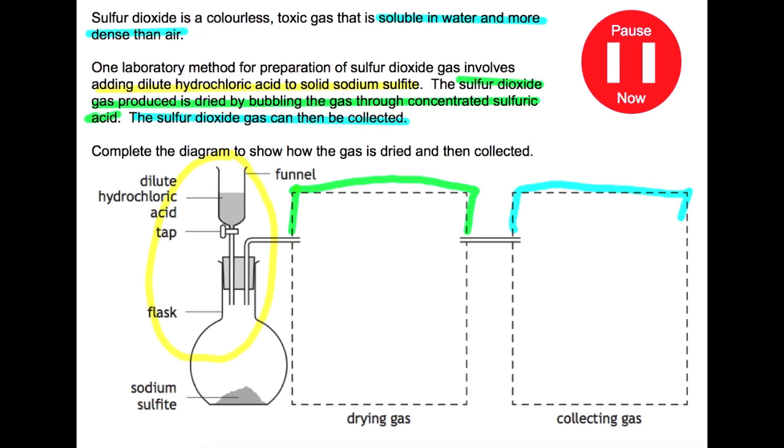So we're going to draw in the two parts that are required for this. So for the first bit we need to bubble the gas into the concentrated sulfuric acid. So we need to have some sort of vessel to do that in. So I'm going to draw a boiling tube here and the delivery tube we have here is going to go down and it has to go into the sulfuric acid. So the tube going in needs to be quite long and then the tube coming out will be shorter. We're bubbling the gas into the concentrated sulfuric acid.